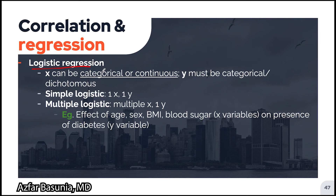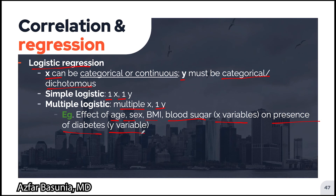With logistic regression, the dependent variable y must be categorical or dichotomous, and x can be either categorical or continuous. In simple logistic regression, we have one x and one y variable. In multiple logistic regression, we have multiple x and one y variable. An example: studying the effect of age, sex, BMI, and blood sugar — the x variables — on the presence or absence of diabetes, our dichotomous y variable. The biggest advantage of multiple logistic regression over simple logistic regression is the ability to account for confounders.